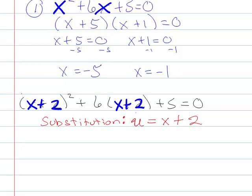So if I did that, then everywhere I see an x plus 2, I'm just going to write a u. So over here, I have x plus 2 quantity squared. So I'm just going to write, instead of x plus 2, I'm going to write u squared.